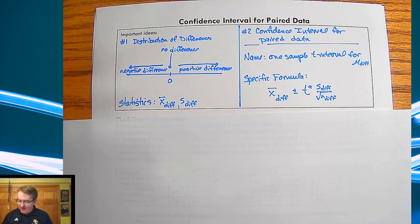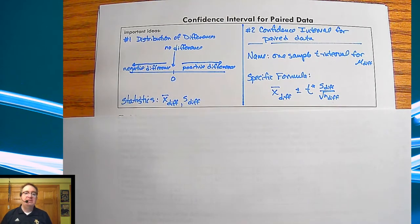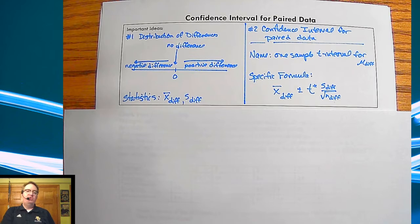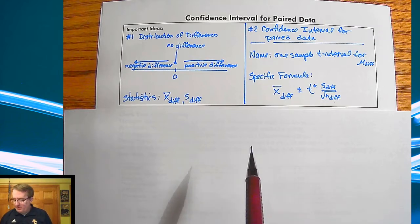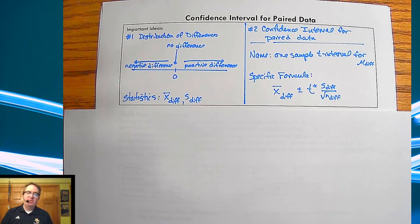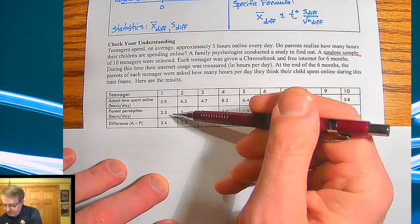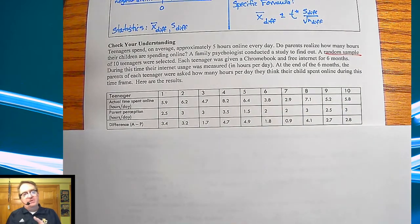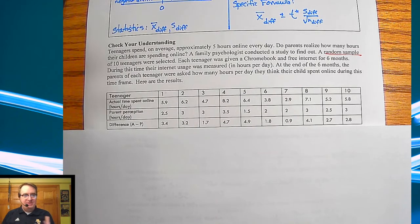I usually get a question here — sometimes people ask what happens if you forget to label it and just run it as a one-sample T interval. I believe you should get at least three out of the four points, if not all four, because you're going through the same process. As long as you do all the interpretations correctly, that's fine. Just remember: any time you're subtracting for one person — one teenager subtracting two values — that's a mean of differences. When you're starting with two different populations, that's the difference of the means. That's the distinction between those two.